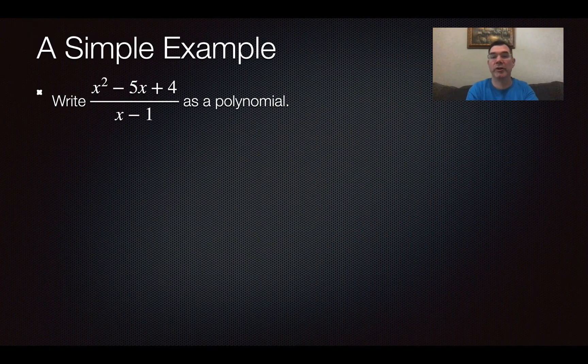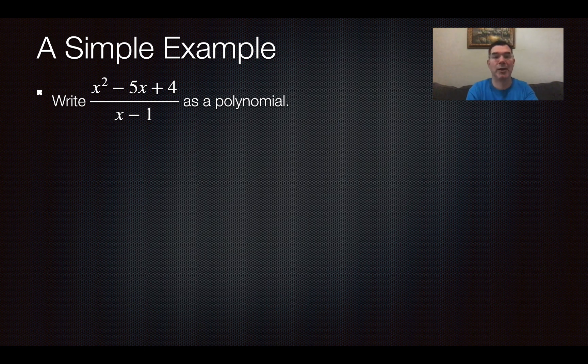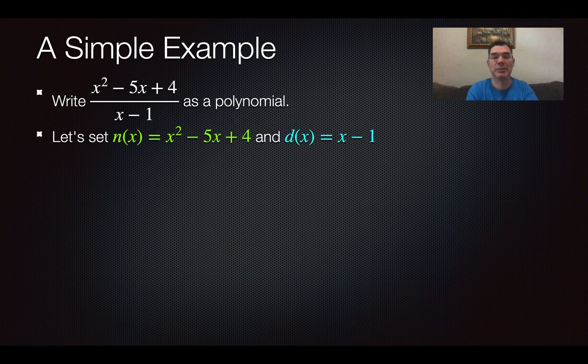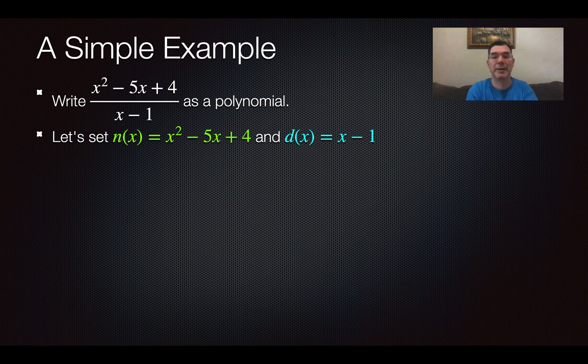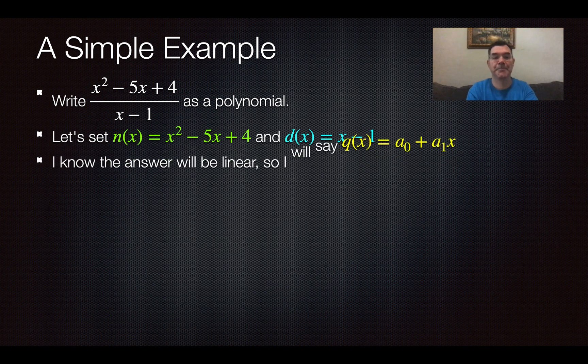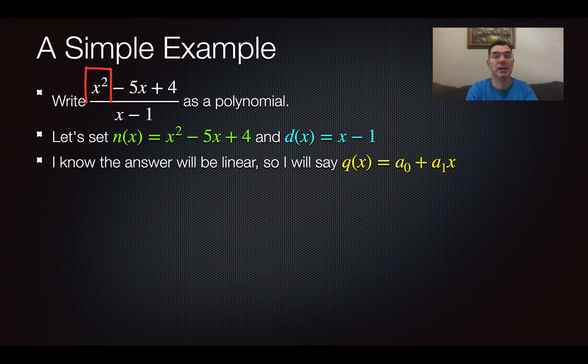Let's talk about an example where there are no Maclaurin series involved. It's just algebra. We're taking a polynomial and dividing it by another polynomial, just to show you that it's not an easy thing to do unless you rearrange it as a multiplication problem. So the numerator is x² - 5x + 4 and the denominator is x - 1. I know that the answer is going to be linear because if you look at the degrees, the degree on top is 2, the degree on the bottom is 1. When you divide a quadratic by a linear, you're going to get another linear.